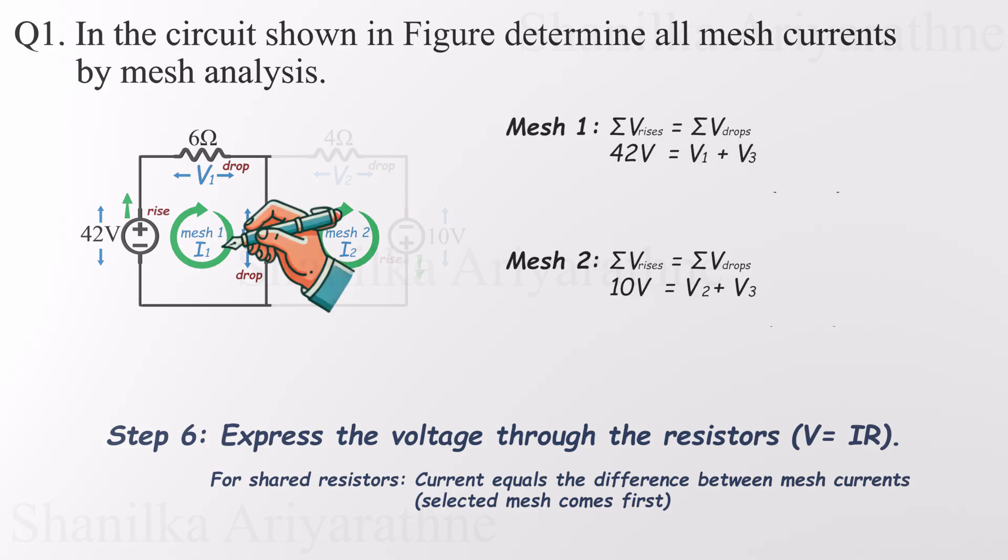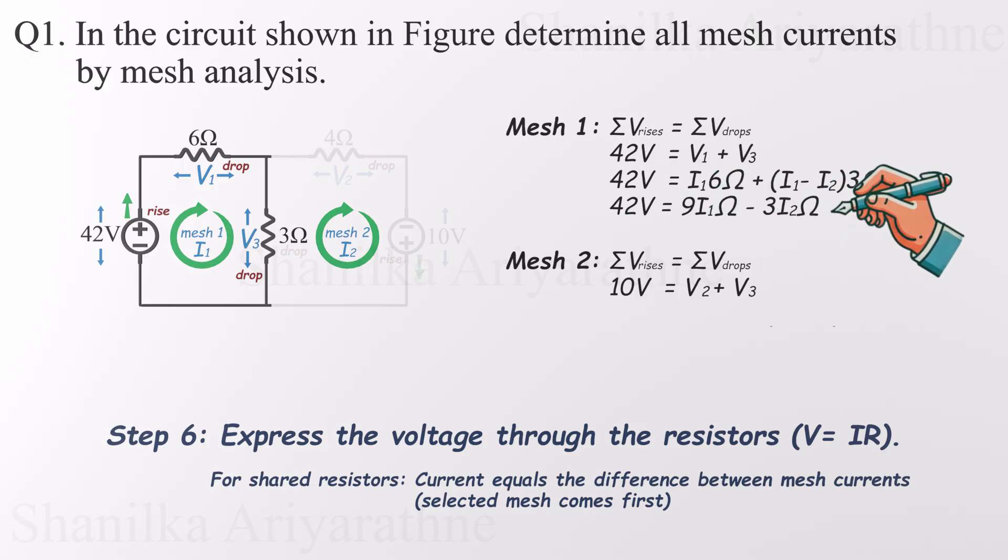So starting with mesh 1, V1 becomes I1 times 6 ohms. Nice and simple. But V3 is across a resistor shared with mesh 2, so we write it as I1 minus I2 times the resistor value. Always put the current from the mesh you're analyzing first. Now we can simplify the equation like this.